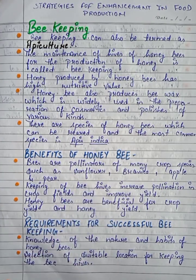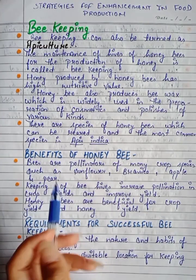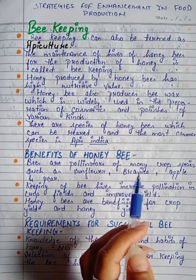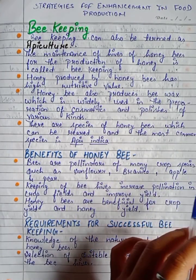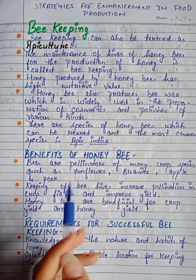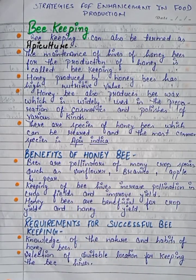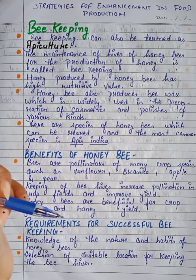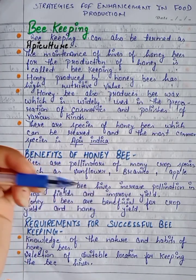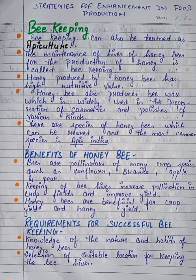What are the benefits of honey bees? Bees are pollinators of many crop species such as sunflower, brassica, apple, and pear. When bees are present in crop fields, they improve the yield.